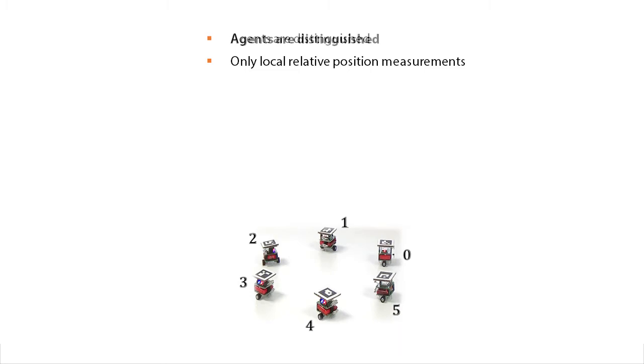We consider agents that are distinguished and numbered, and assume that they can only measure the local relative position of their neighbors. Therefore, our strategy can be implemented on agents without global positioning sensors, common sense of orientation, or communication capability.